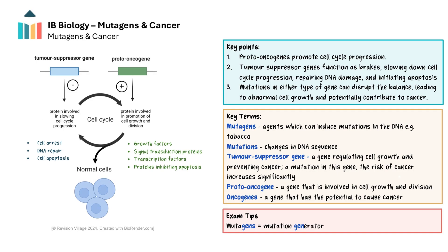Cancer is intimately tied to the cell cycle, as cancer is fundamentally a disease of uncontrolled cell proliferation. The cell cycle is tightly regulated by checkpoints, and these ensure that cells only enter mitosis and divide when conditions are favourable and DNA is not damaged. Tumour suppressor genes and proto-oncogenes work together to maintain normal cell function and help regulate the cell cycle.